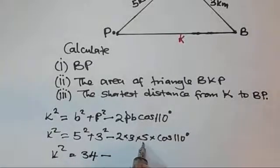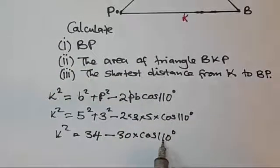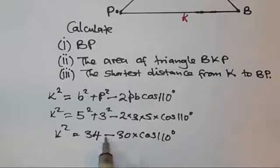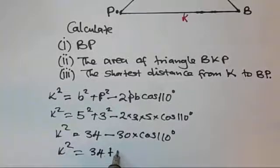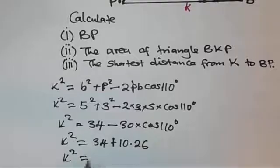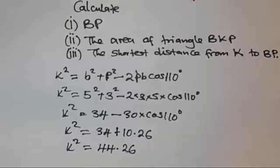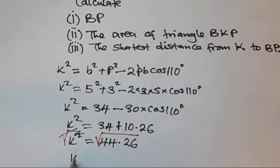Multiplying and simplifying: 2 × 3 × 5 gives 30, so we have 30·cos(110°). Since cos(110°) is negative, multiplying a negative number by 30 gives a positive result. So we get 25 + 9 + 10.26, which gives k² = 44.26. Remember we are looking for k, not k², so we take the square root of both sides.